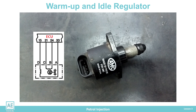The regulator coils are supplied from the ECU with PWM signals. The movement of the regulator valve occurs when one of the windings receives a PWM signal with a higher duty factor.